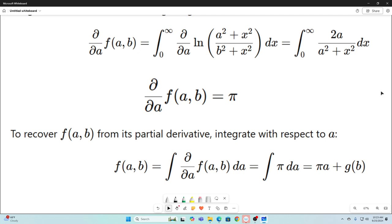Okay, now we're going to recover f(a,b) from its partial derivative just by integrating with respect to the variable that we differentiated with respect to. So we have f(a,b) is equal to the integral of the partial with respect to a of f(a,b) integrated with respect to a. You can see that will be f(a,b) because our partial with respect to a and our integral will cancel out. But don't forget, the partial with respect to a of f(a,b) was just π, so that's equal to the integral of π da, which is πa.